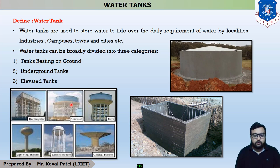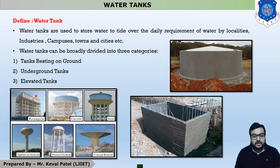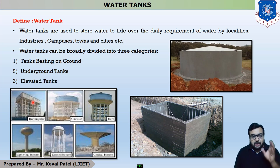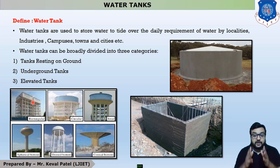Our second elevated water tank is the circular overhead water tank, and our last tank is the rectangular overhead water tank. These types of water tanks were already discussed in our last lecture. After that, we are discussing about the main five points which we must pay attention to when designing any water tank.